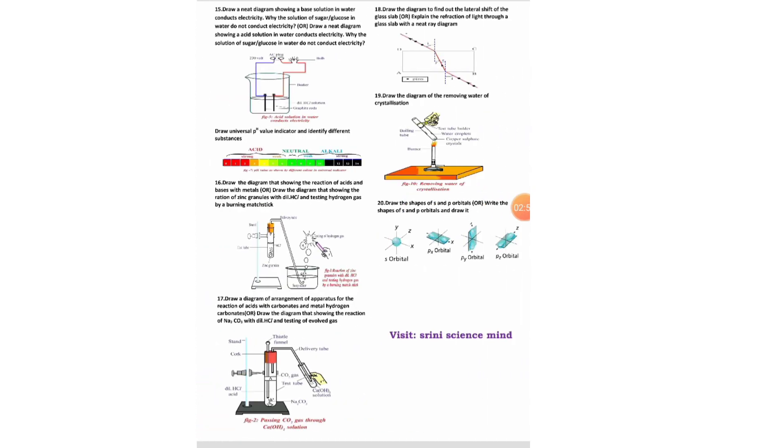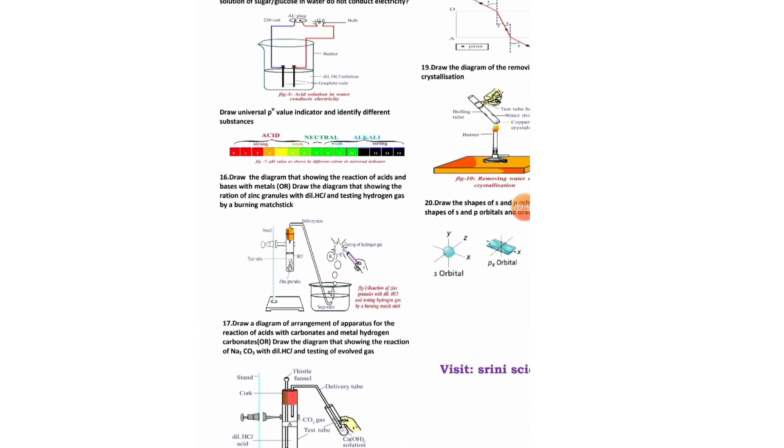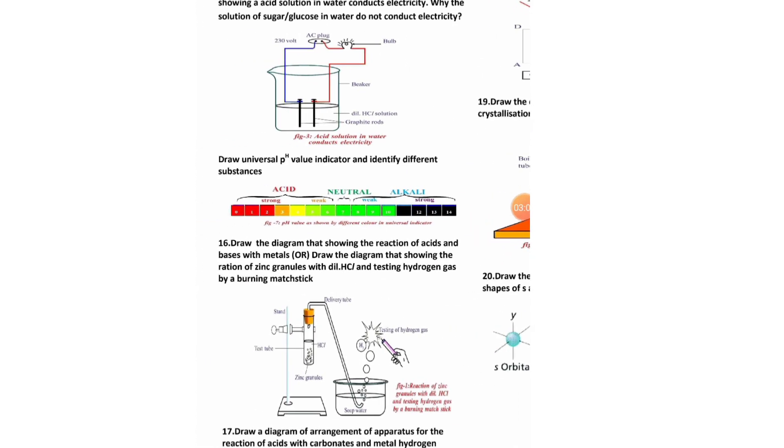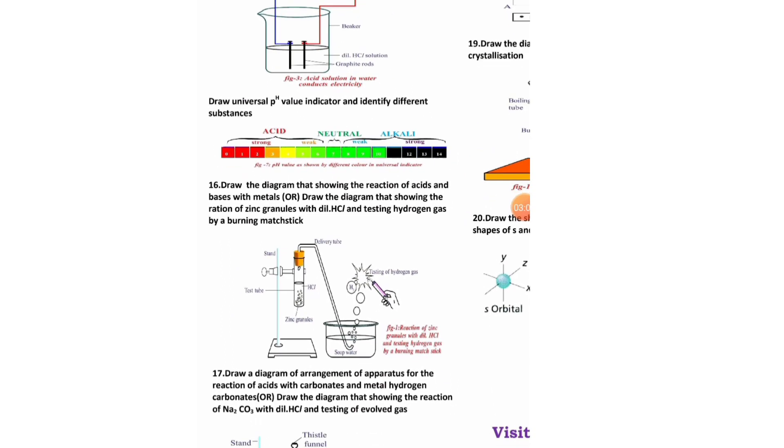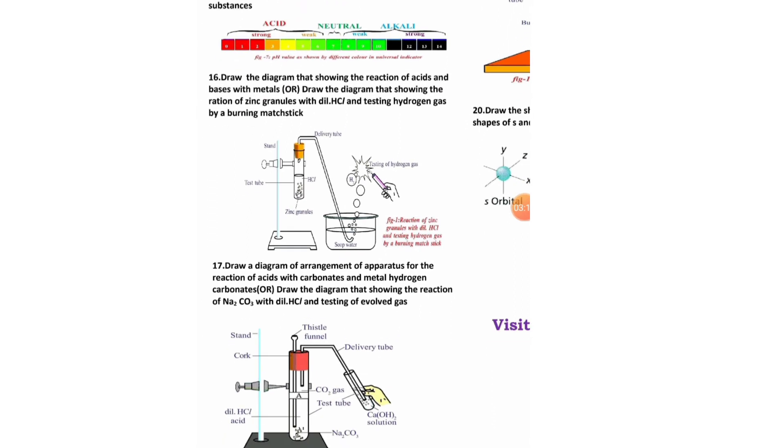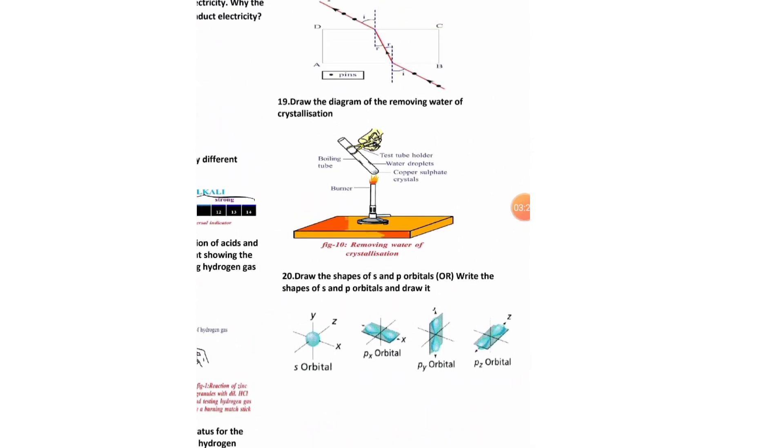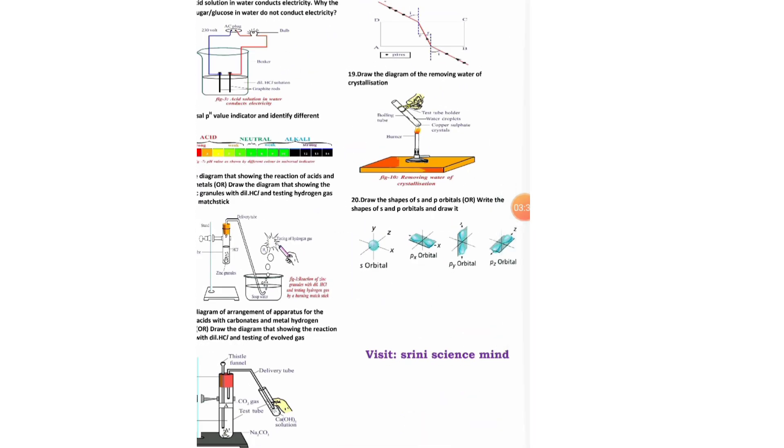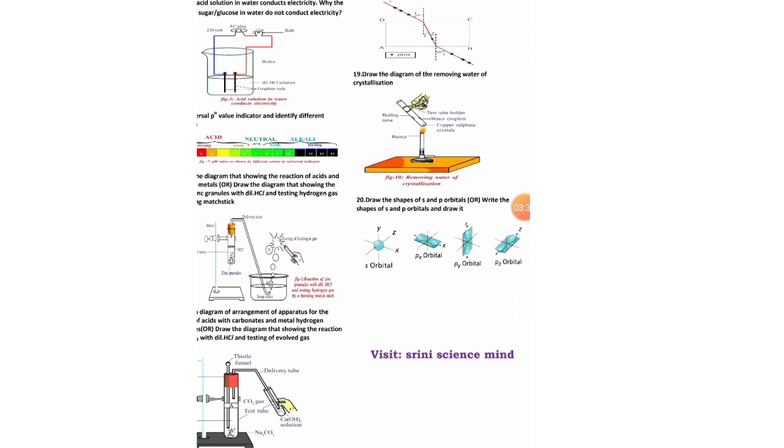Next page, if you go to the next page here, we are having a diagram. Draw the neat diagram showing the base solution in water conducts electricity. Next, draw the universal pH value indicator and identify different substances. Draw the diagram that shows the reaction of acids and bases with metals. Next, draw the diagram of arrangement of apparatus for the reaction of acids and carbonates and metal hydrogen carbonates. Next, draw the diagram to find out the lateral shift, lateral shift of the glass slab.